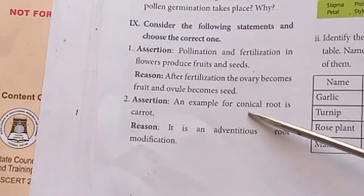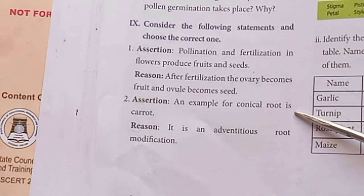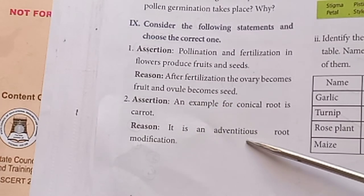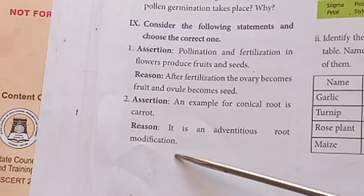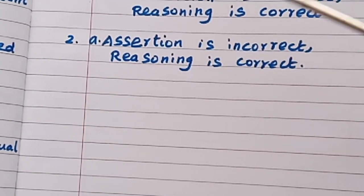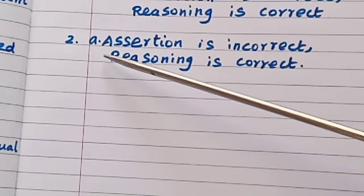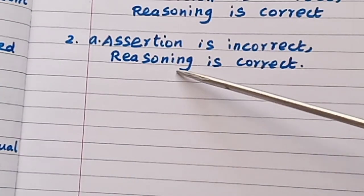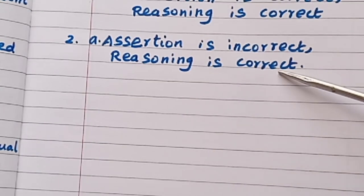Second assertion-reason question. Assertion: An example of a conical root is carrot. Reason: It is an adventitious root modification. Answer: Assertion is incorrect; reasoning is correct.